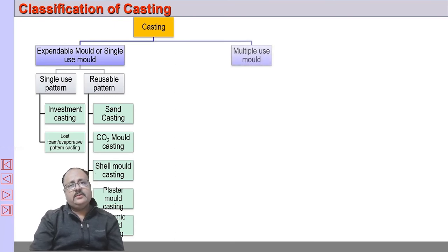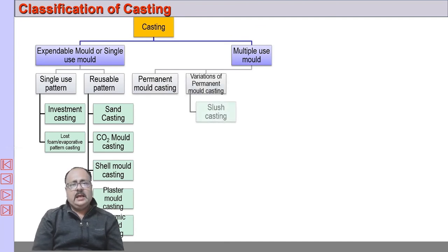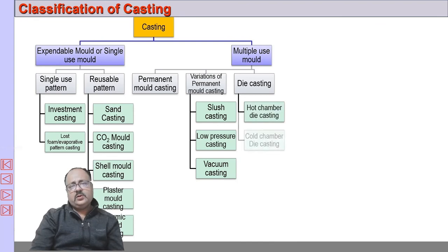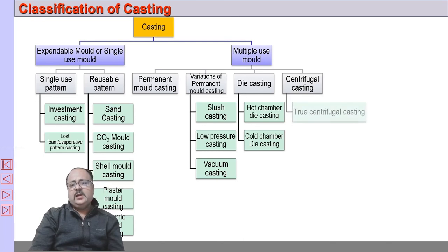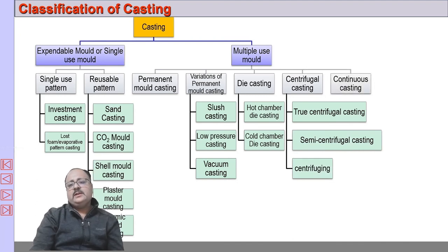The other type uses a multiple-use mould, also called dies. Under multiple-use mould, you have permanent mould casting and its variations such as slush casting, low pressure casting, and vacuum casting. Then you have die casting — hot chamber die casting, cold chamber die casting. We also have centrifugal casting in three types: true centrifugal casting, semi-centrifugal casting, and centrifuging. And continuous casting, which is used in integrated steel plants.